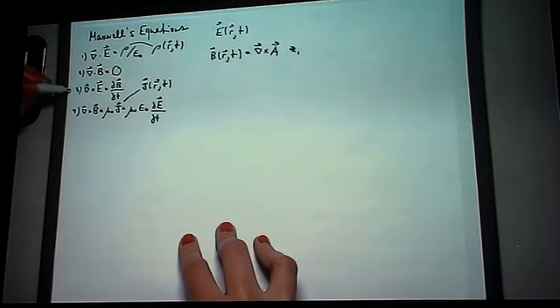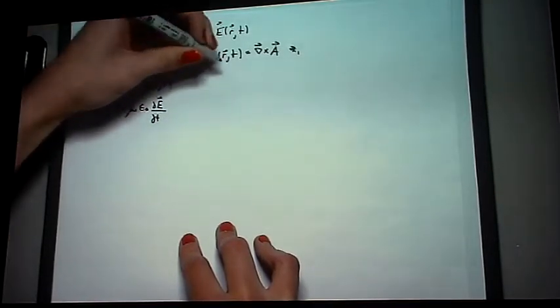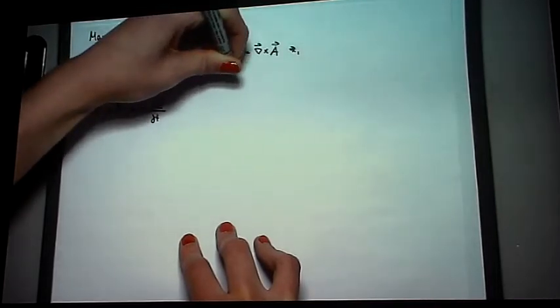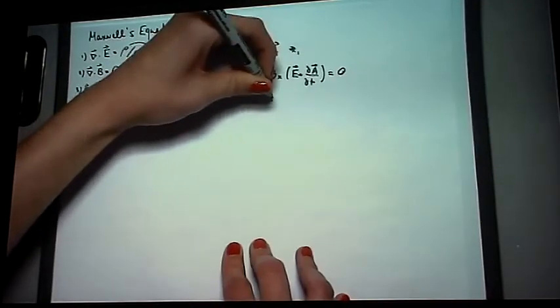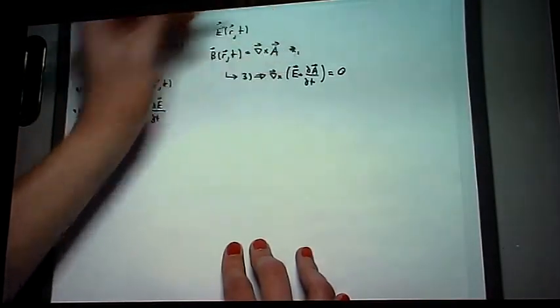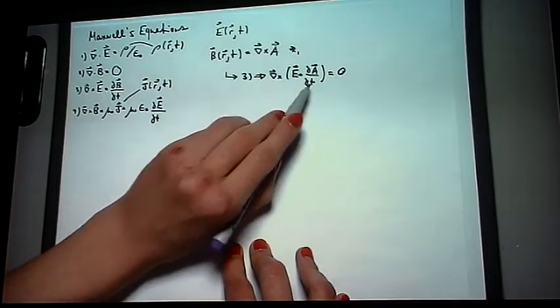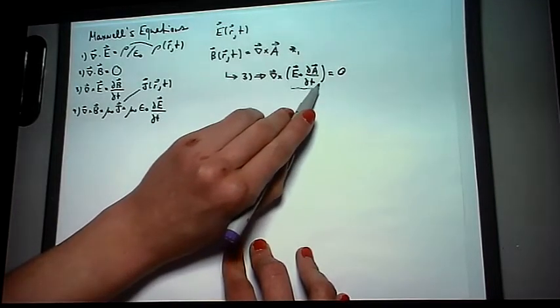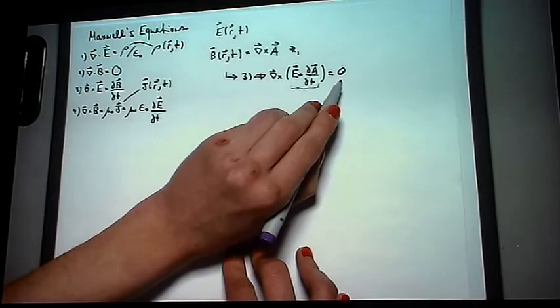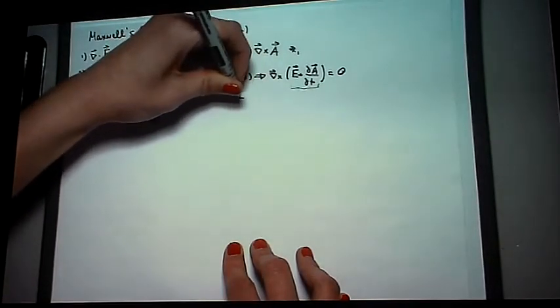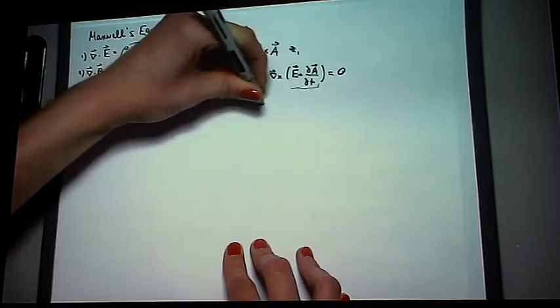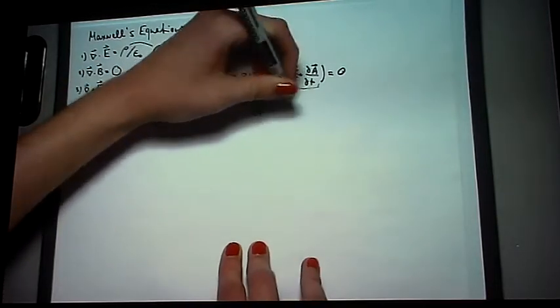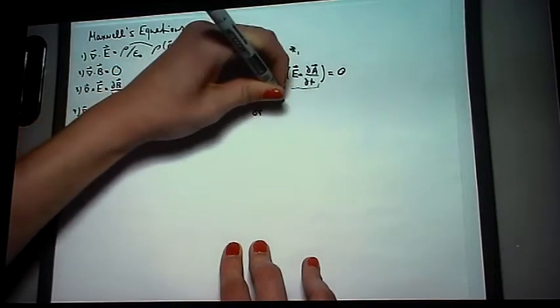Plugging it into the third Maxwell equation, this one over here, yields... So, because the curl of this quantity over here is equal to 0, we can define this quantity as being equal to the gradient of a scalar potential, phi.